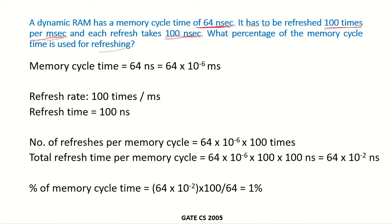So what is given? The memory cycle time is 64 nanoseconds or we can say 64 × 10^-6 milliseconds.